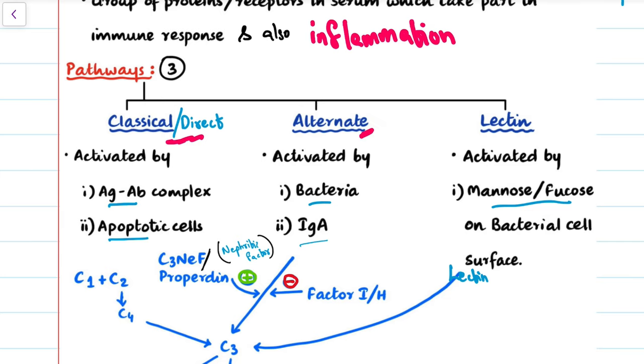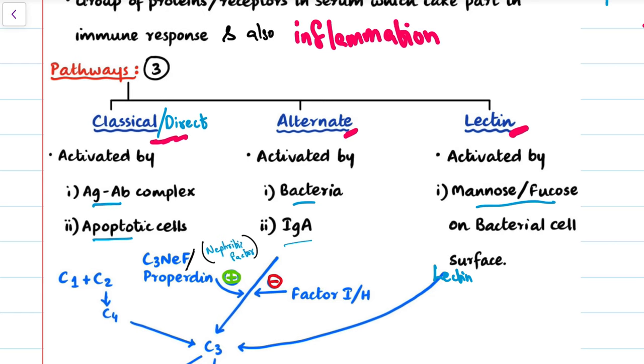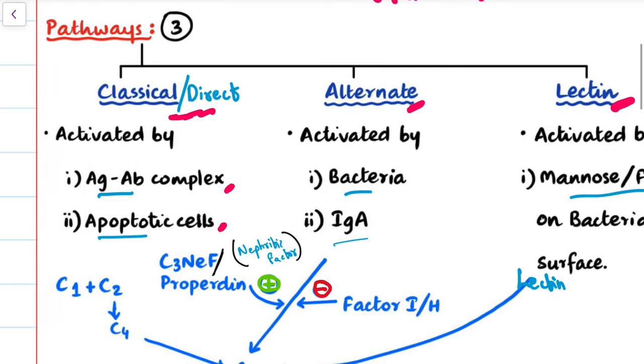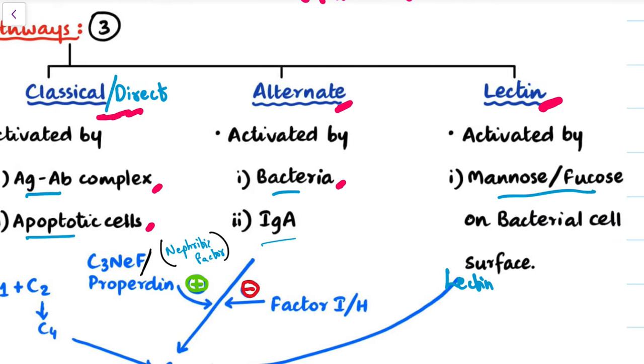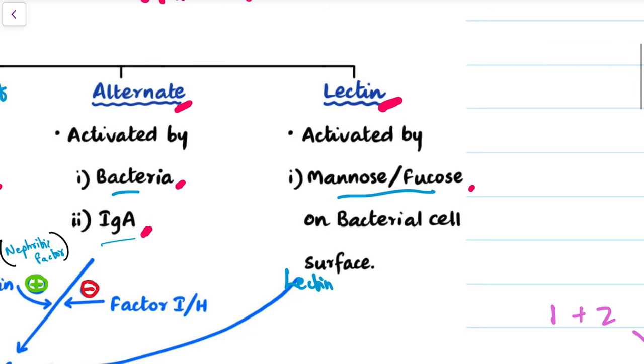For the direct pathway, it is the antigen-antibody complex which triggers it, along with apoptotic cells. For the alternate pathway, the bacteria, especially the gram-negative bacteria, and the IgA immunoglobulin activates it. In the lectin pathway, it is activated by the mannose or fucose of the bacterial cell surface. Mannose is one of the most characteristic features of a bacterial cell wall.